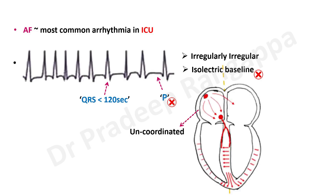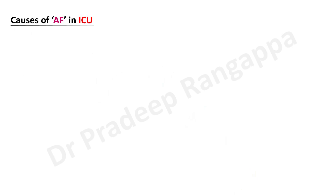Why does AF happen? The whole atrial activity originates in the right atrium where the SA node is. There is an uncoordinated activation of the right atrium that gets perpetuated, with progressive worsening of right atrial mechanical function due to the dysrhythmia. This inappropriate and uncoordinated activation of RA electrical activity is perpetuated if the underlying cause or triggers are not corrected.